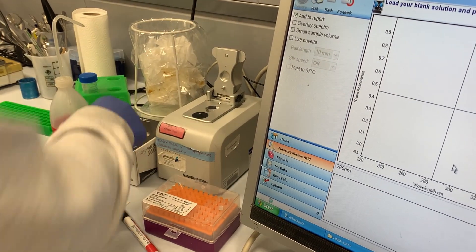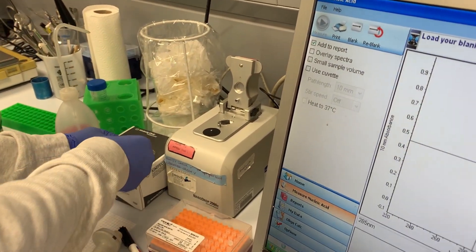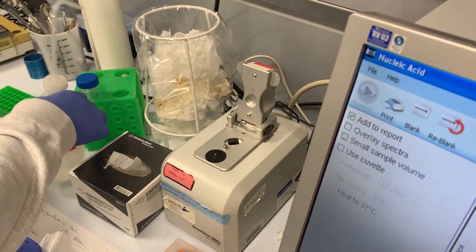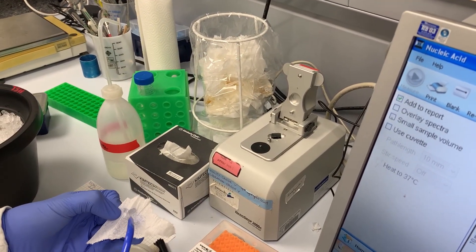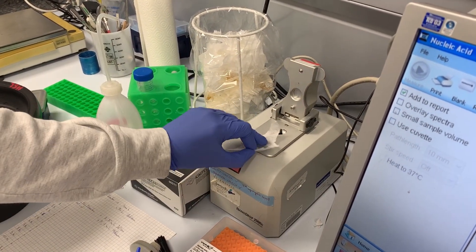But before you can blank, you have to clean the area of measurement prior to use. So you take one of these laboratory wipes and apply some distilled water onto it, and then you clean the area of measurement.